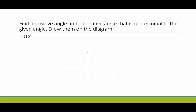Next we have negative 110 degrees. To find a positive coterminal angle, we add 360 to negative 110, which gives us 250 degrees. To find a negative coterminal angle, we take negative 110 degrees and subtract 360, giving us negative 470. So negative 110 is coterminal to negative 470 and to 250 degrees. There are infinitely many because you can just keep adding or subtracting 360.